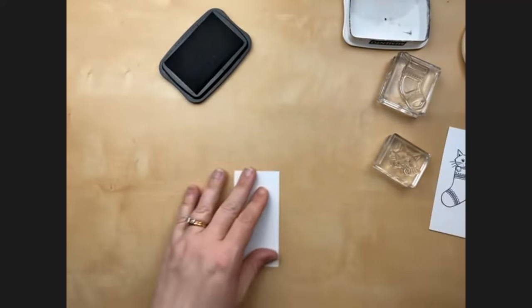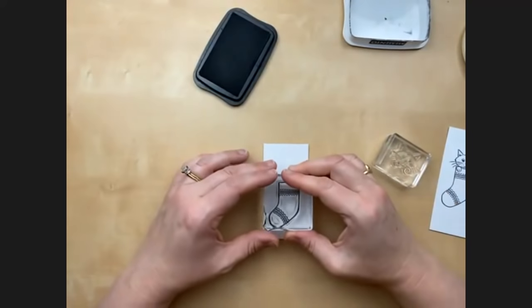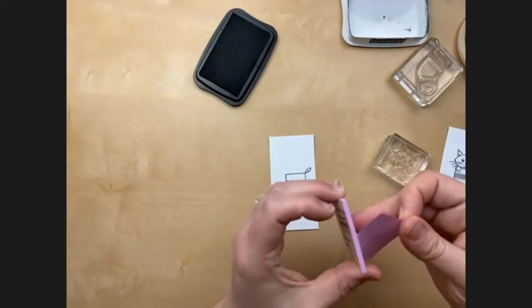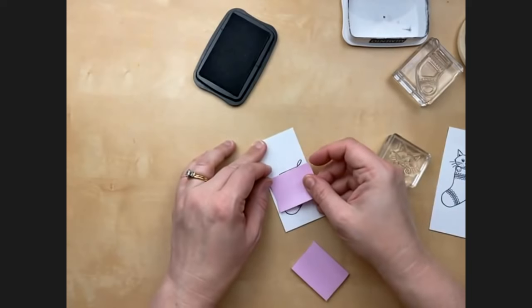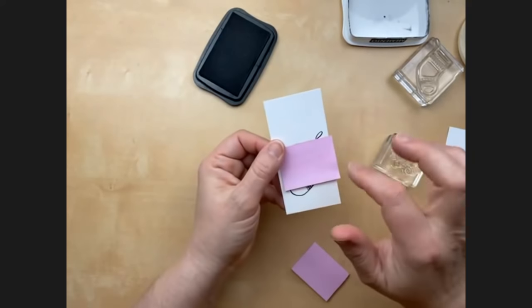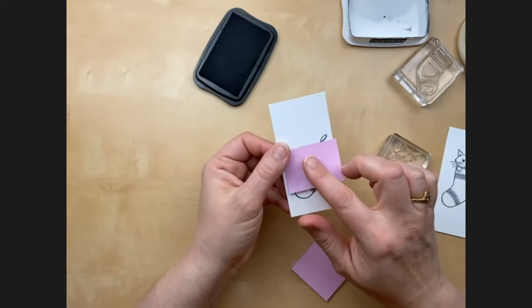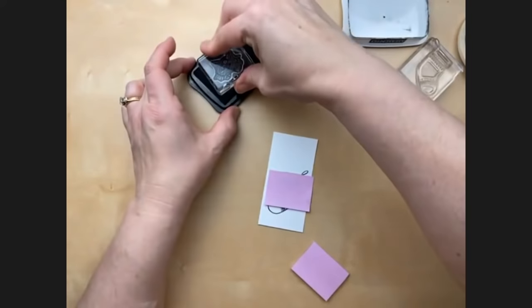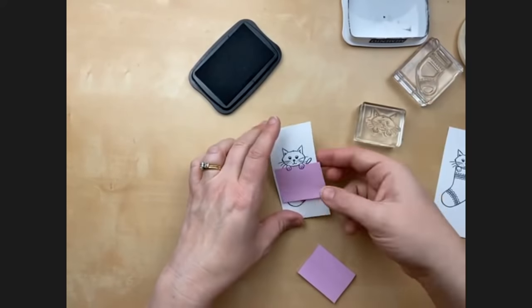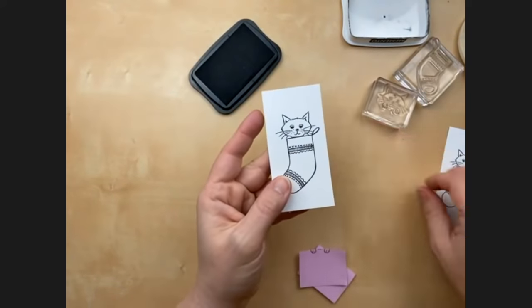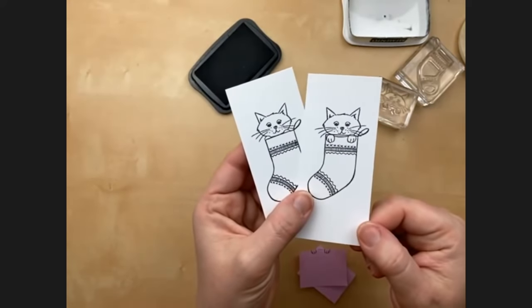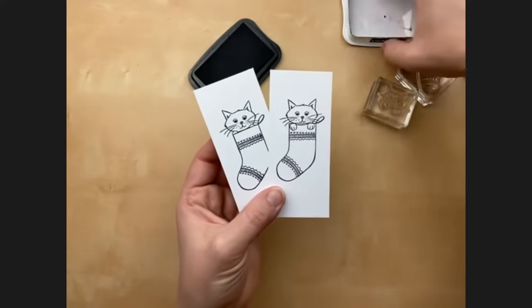They have these cute little paws that look like they're peeking out from the stocking. But when you stamp on here, you get like the line through the face. So the way to avoid that is by doing the masking technique. So you want to stamp the foreground image first. So I'm going to stamp the stocking and then I'm going to use a little piece of sticky notes.